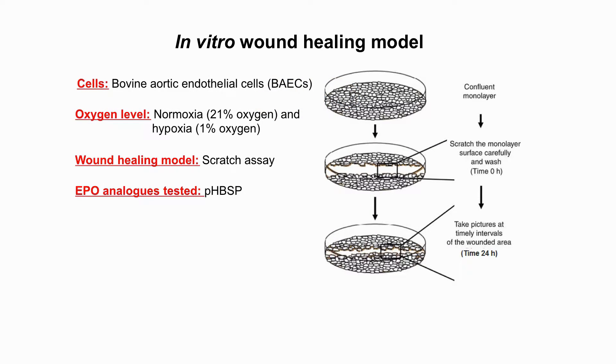The tissue protective effect was assessed by an in vitro wound healing model known as the Scratch assay, using bovine aortic endothelial cells, or BAEC. The effects on cellular proliferation, migration, and apoptosis were also tested. Related nitric oxide production was also assessed.